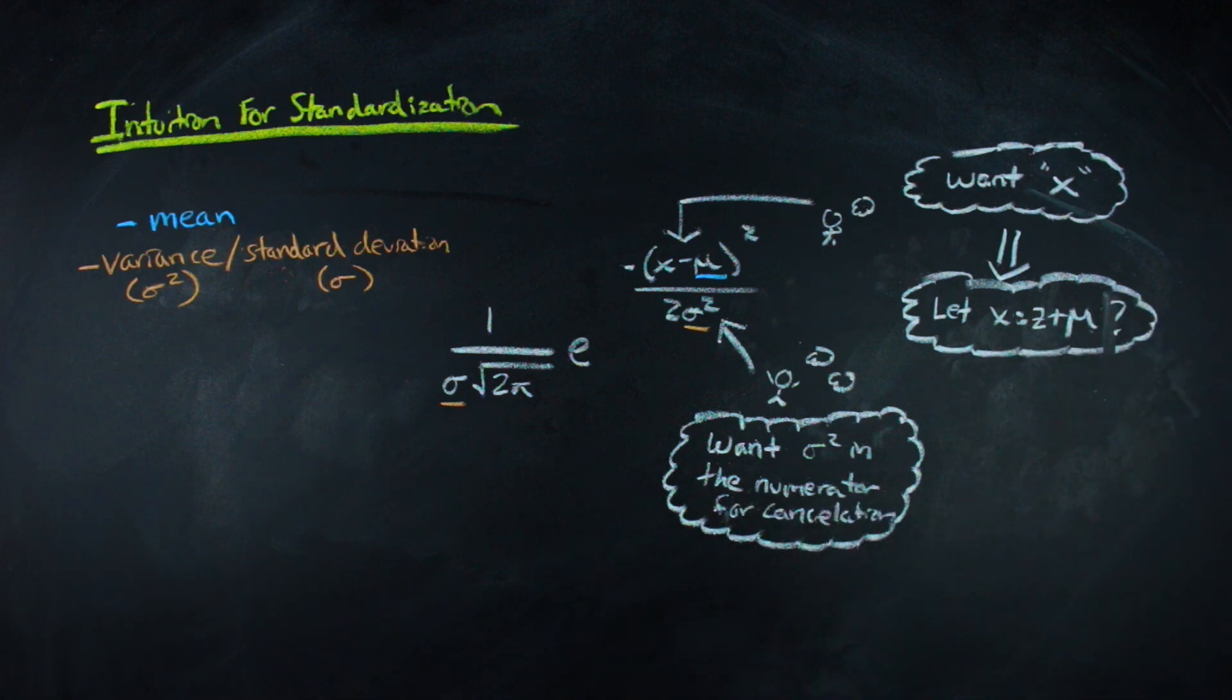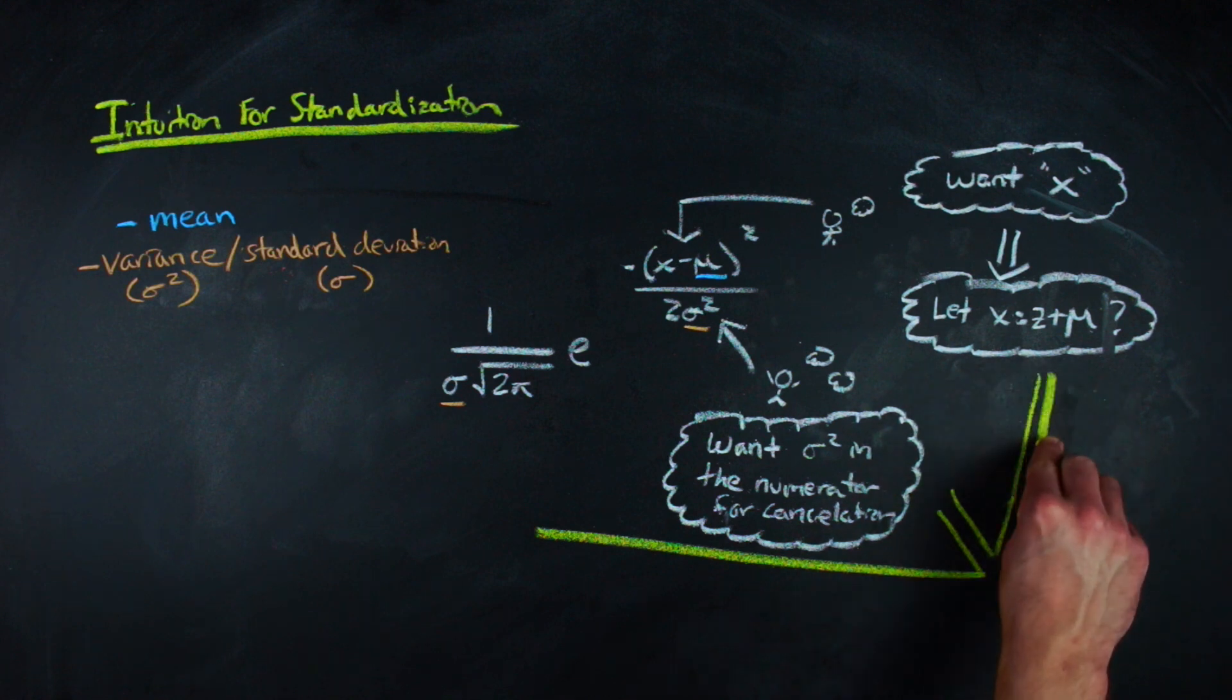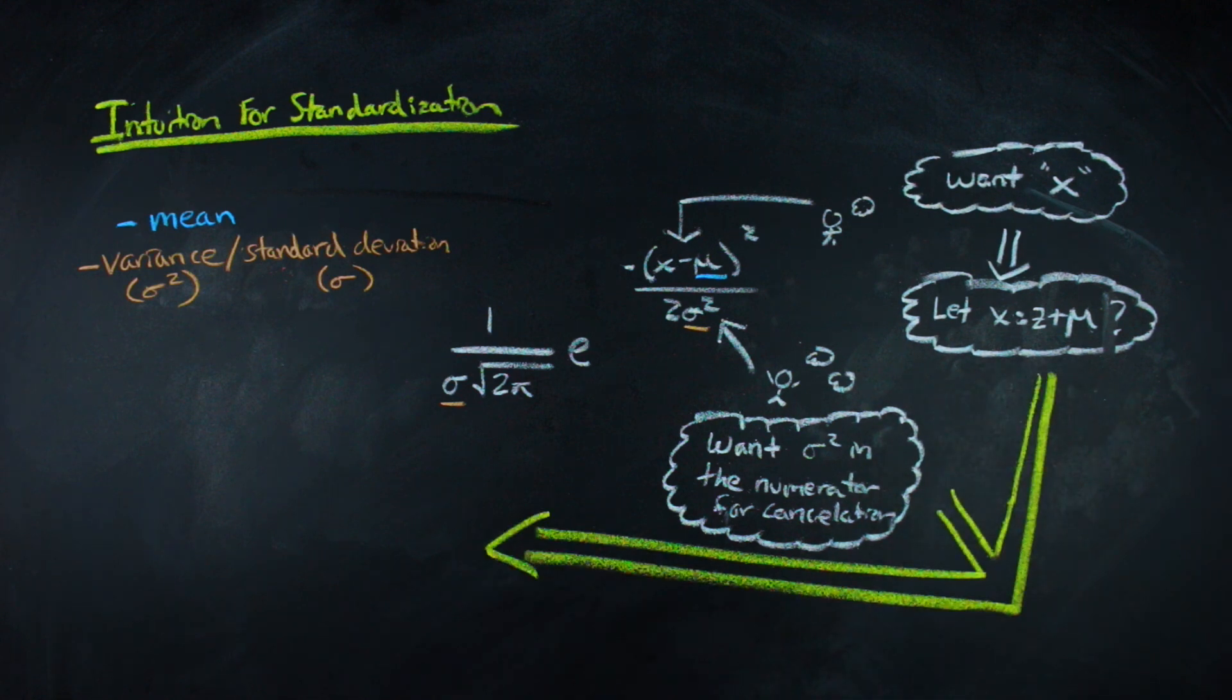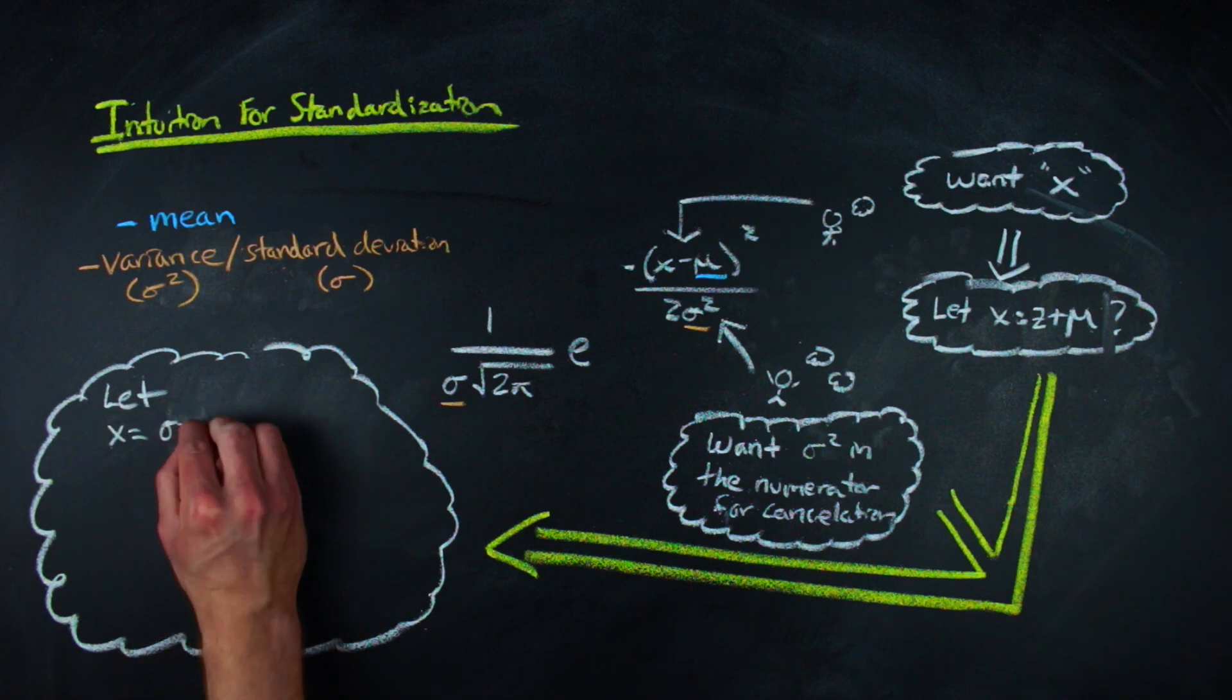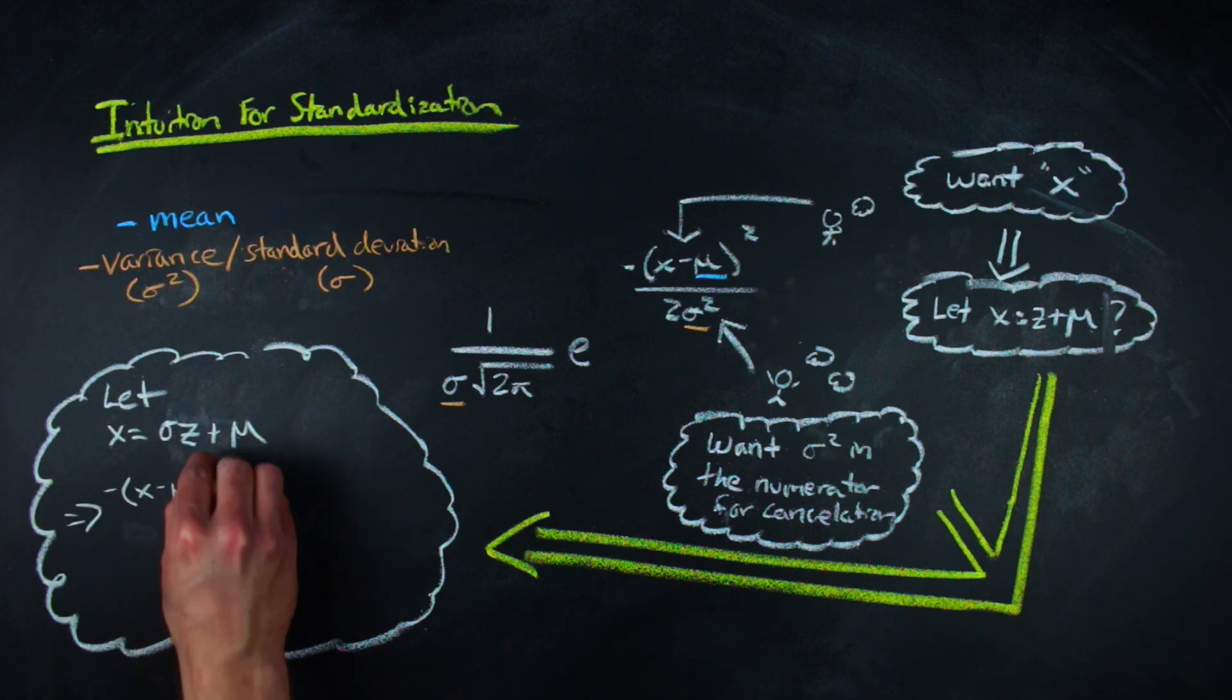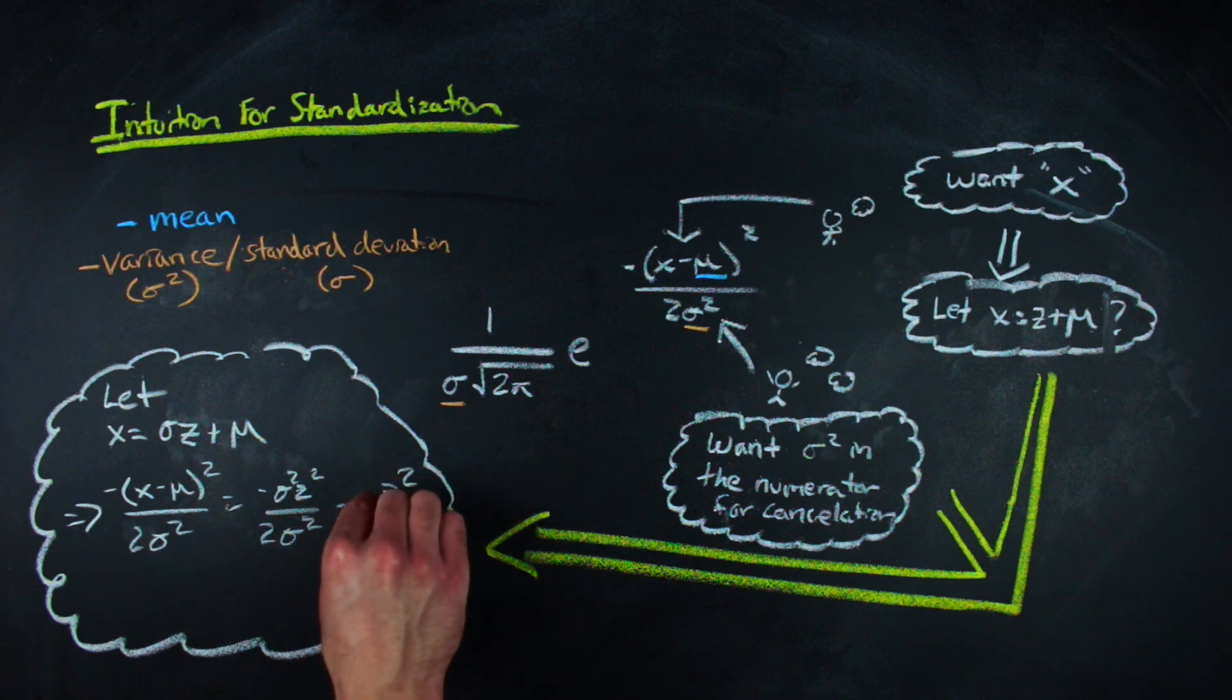Now for the variance, we're not going to be able to directly affect the sigma in the denominator here yet, but we can go ahead and get rid of the one here in the exponent just by multiplying our new variable by sigma. Plugging this in, we get this expression, which essentially standardizes the normal distribution.